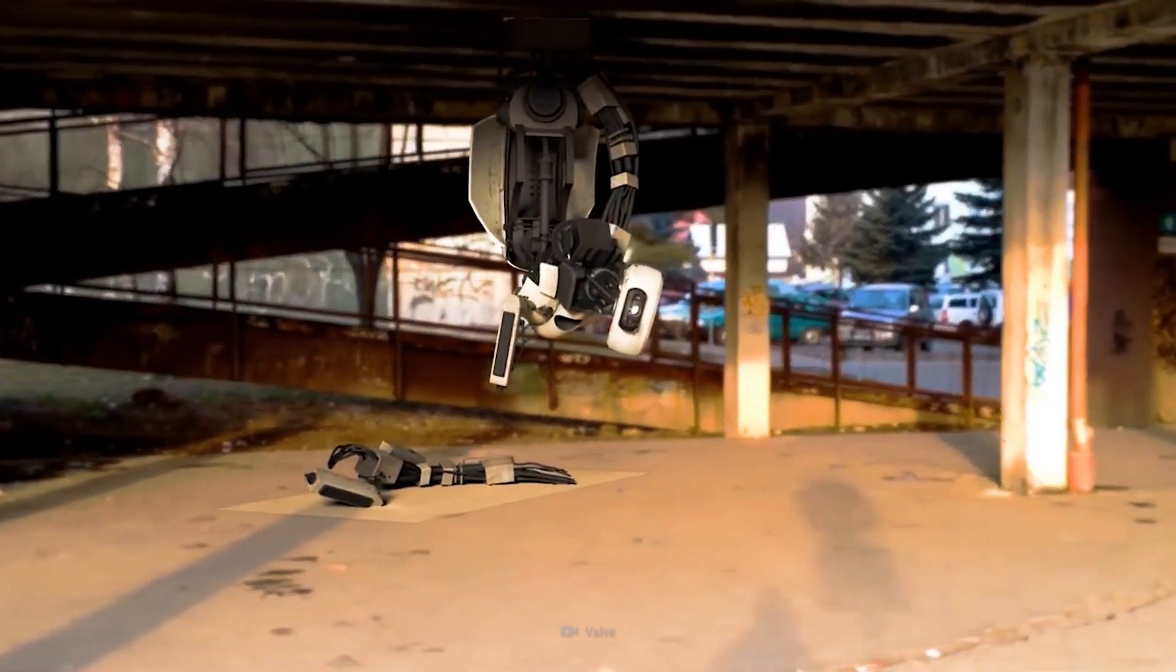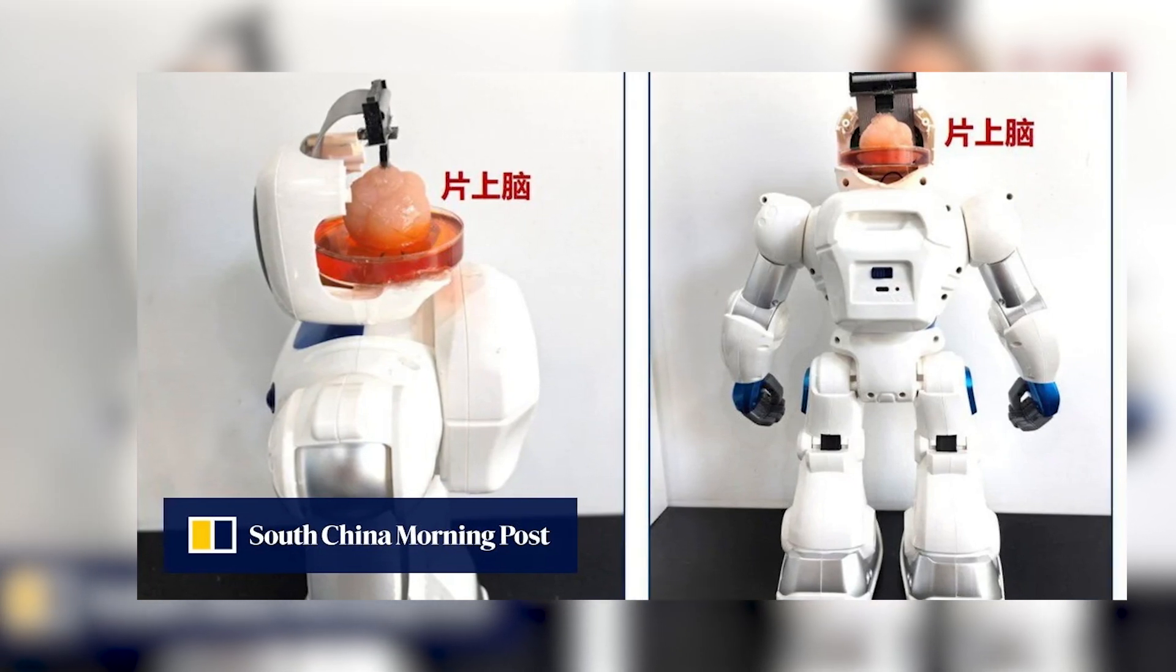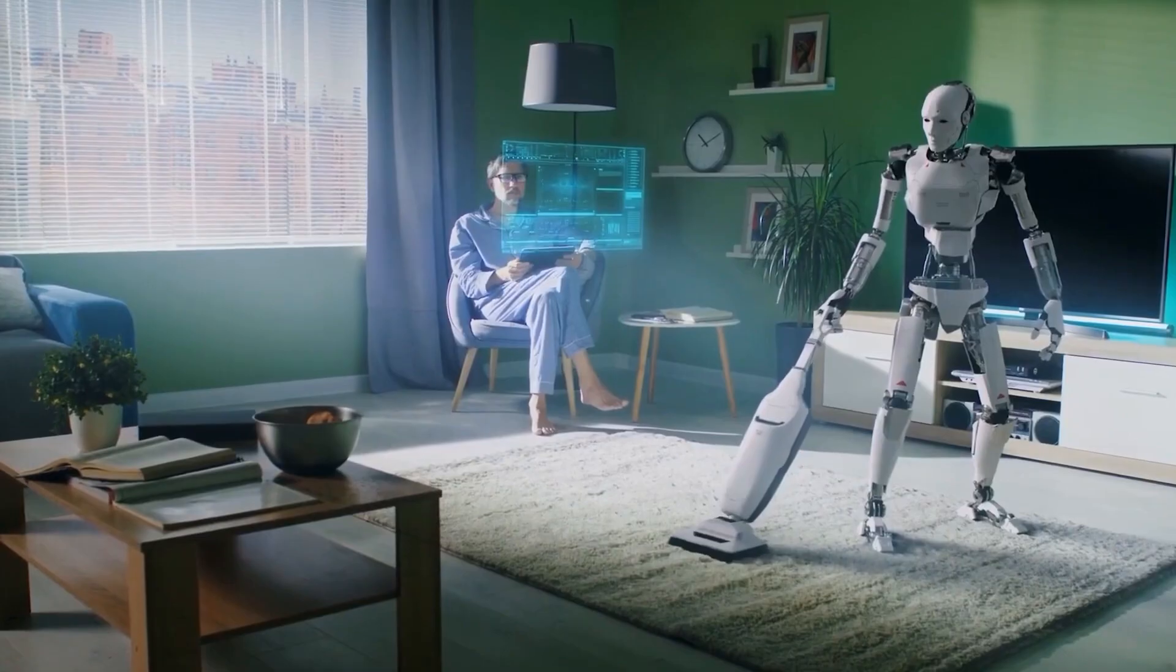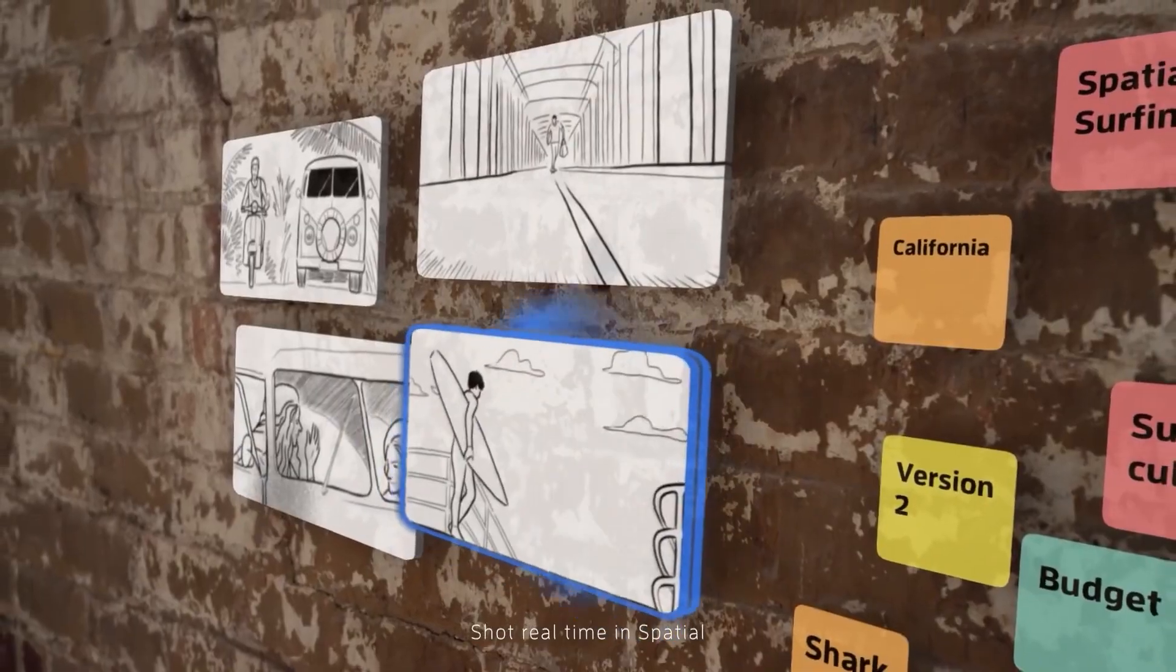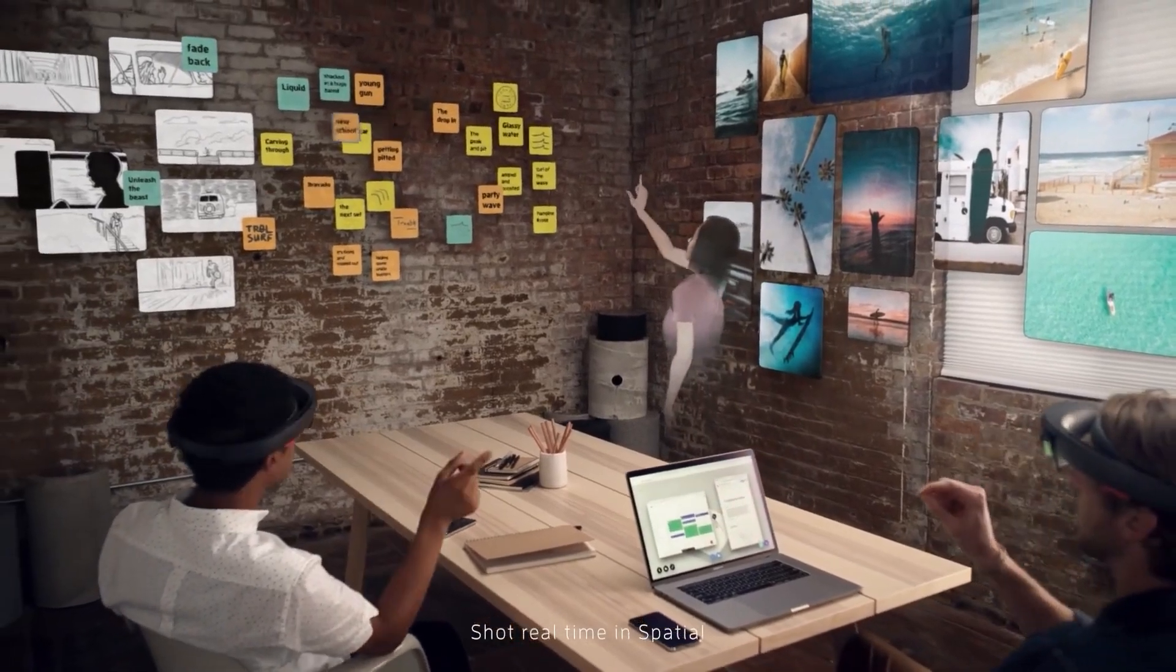The line between artificial and biological intelligence has been erased. Chinese scientists have created a robot with a partially living brain, redefining our understanding of AI and robotics. This isn't science fiction. It's happening now, and it's about to change everything.